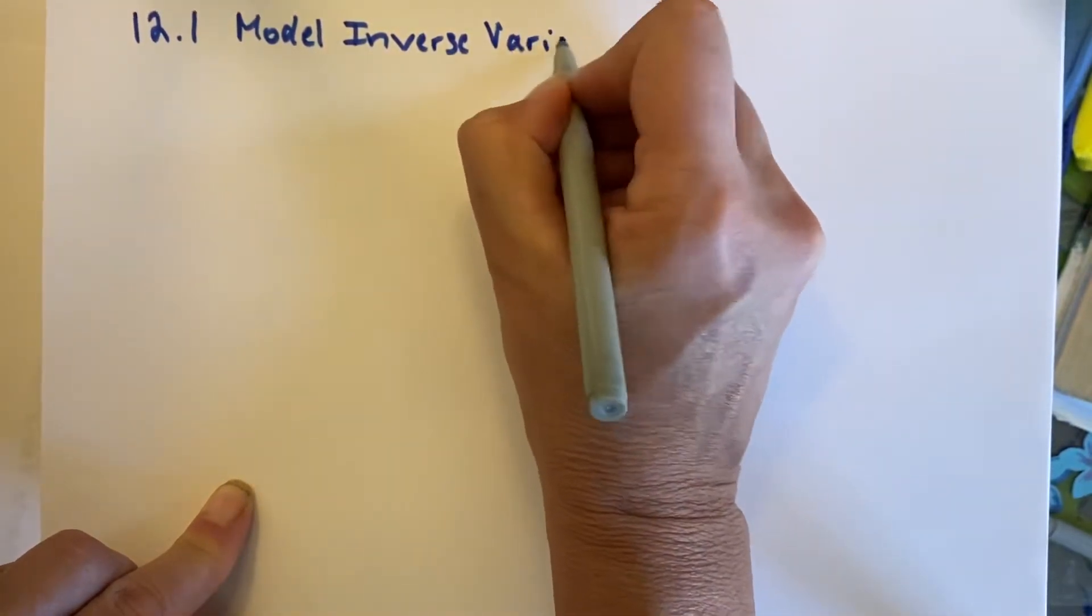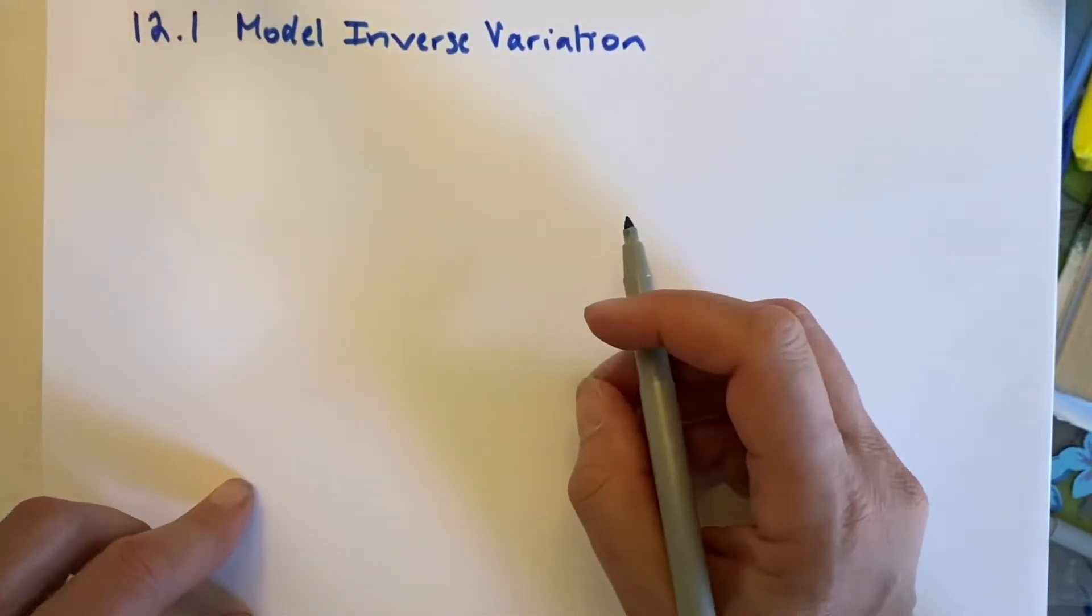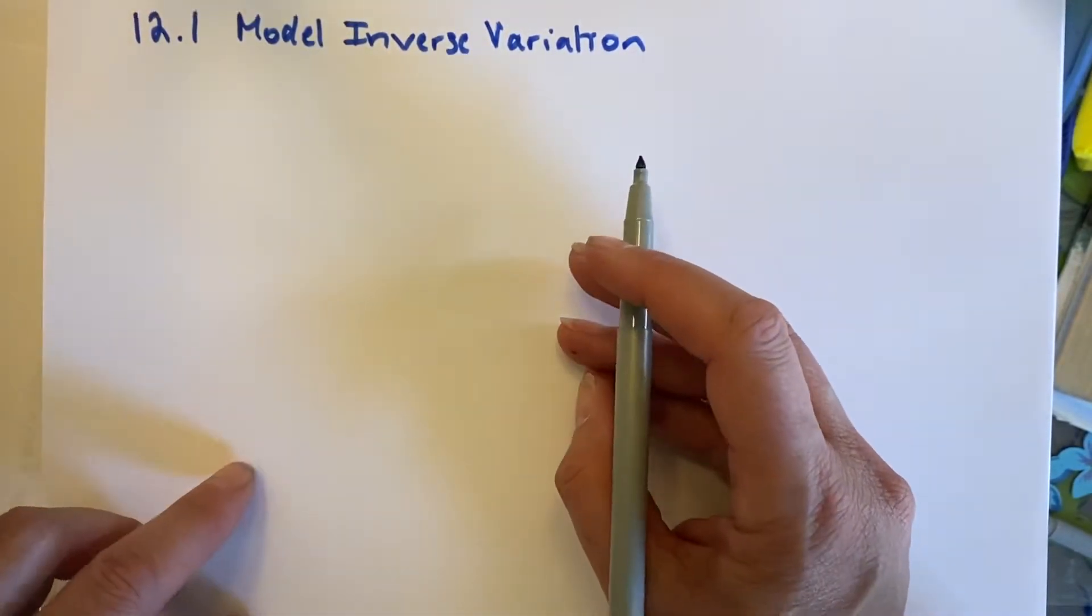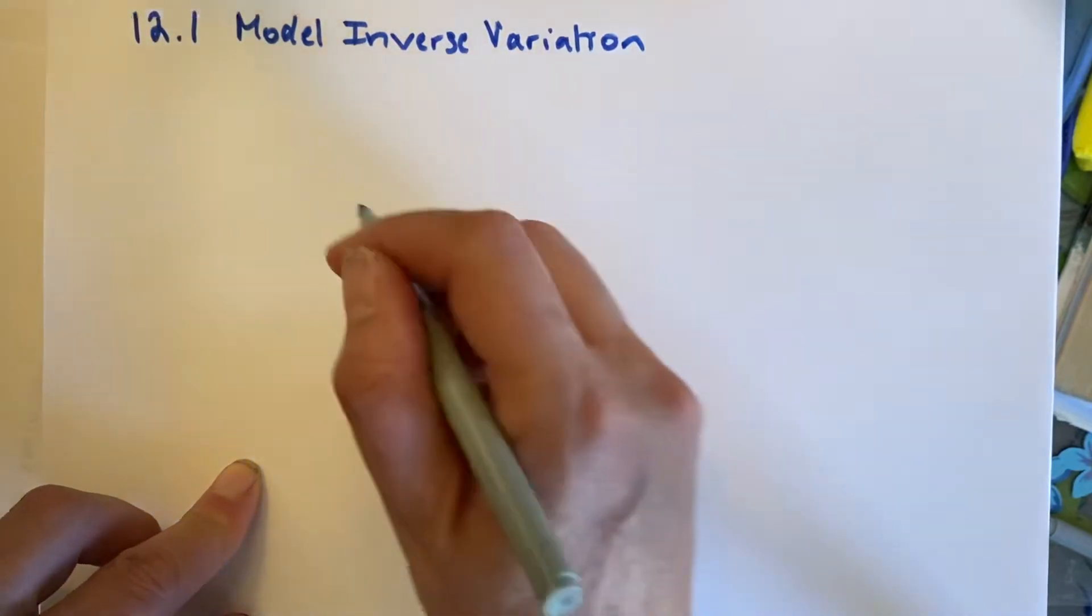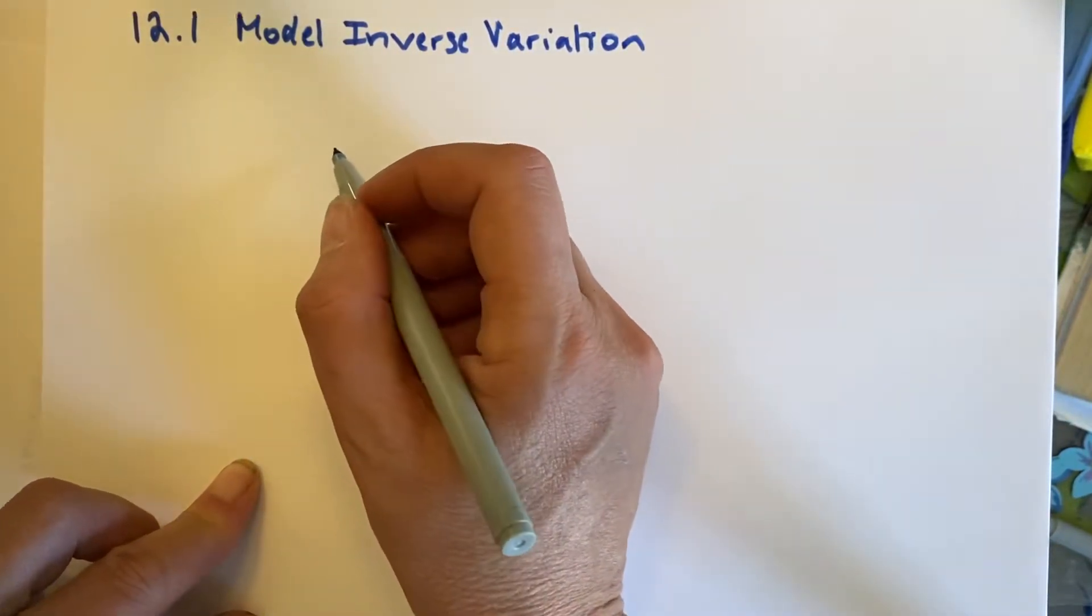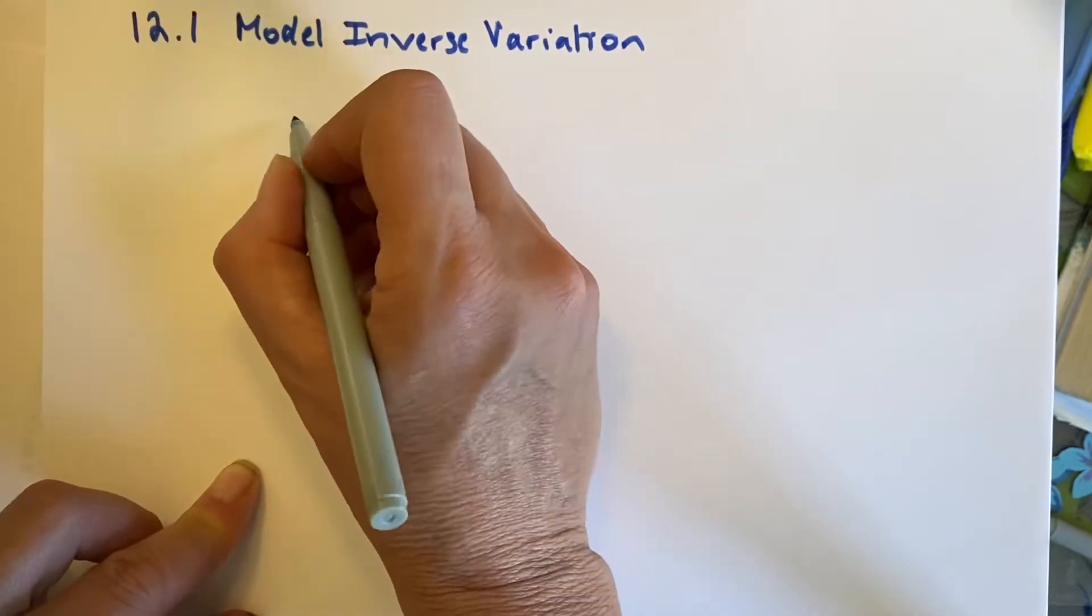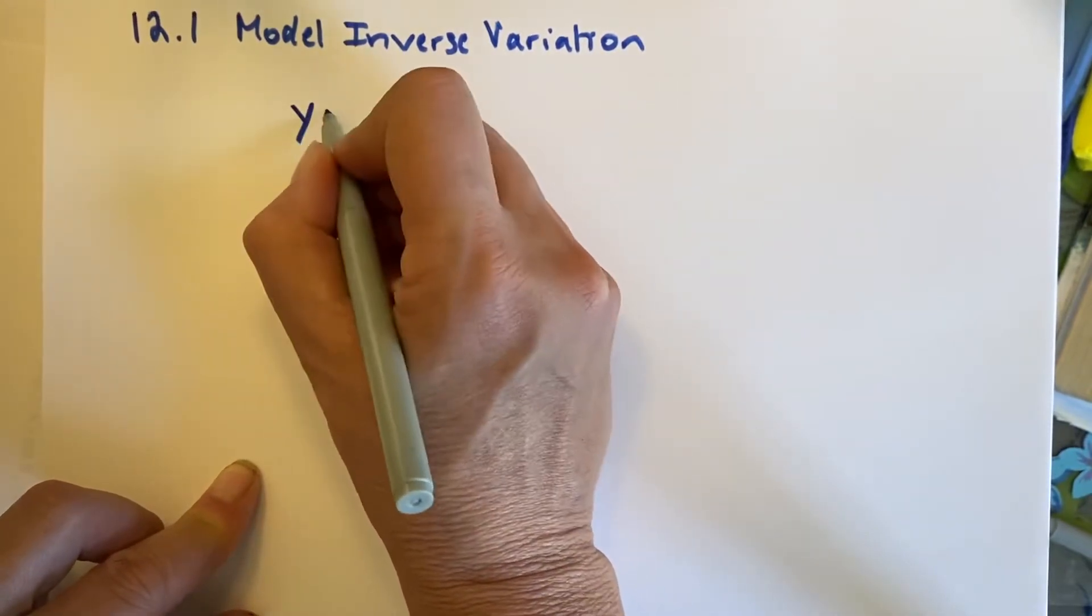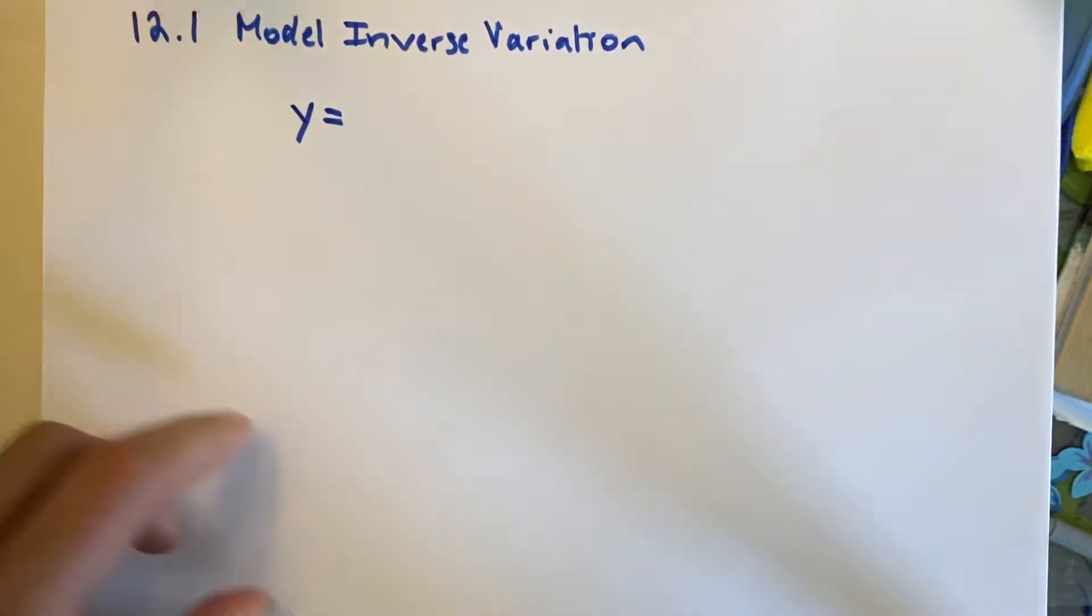Inverse variation is the basic principle behind all rational functions. And I'm going to start by comparing it to direct variation. It's deceptively simple, and you'll see what I mean.